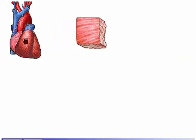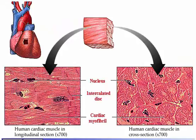Let's take a look at a magnified view of the heart wall. In these histological sections, we see three typical structures found in heart muscle: nuclei, intercalated discs, and cardiac myofibrils.